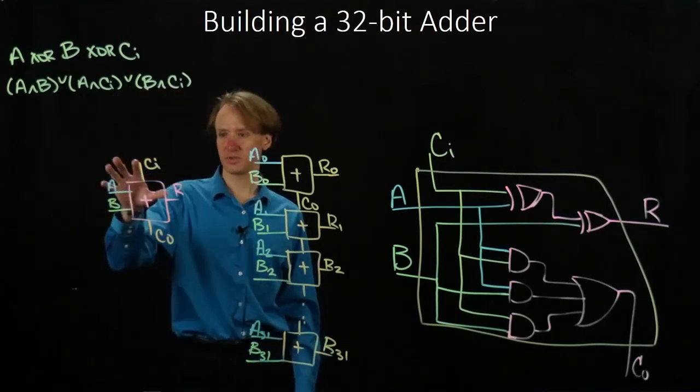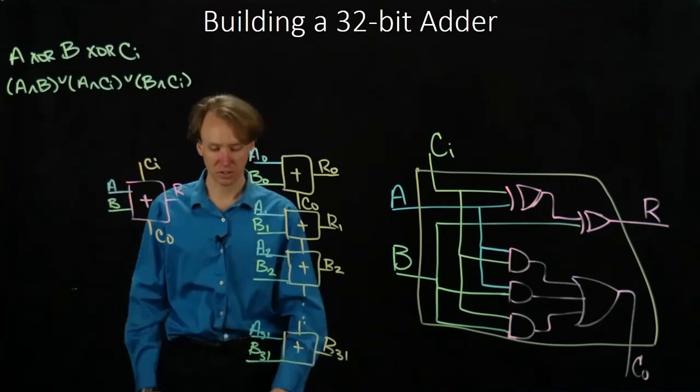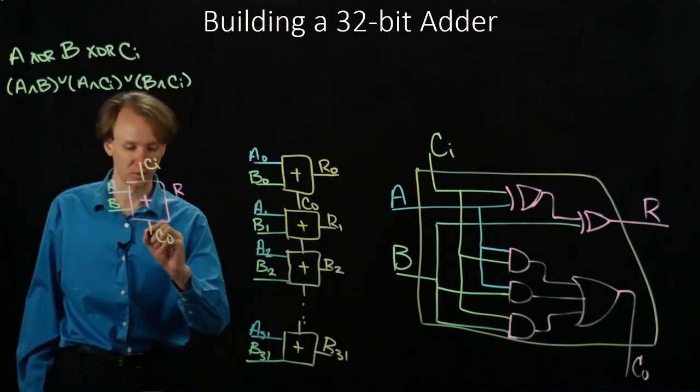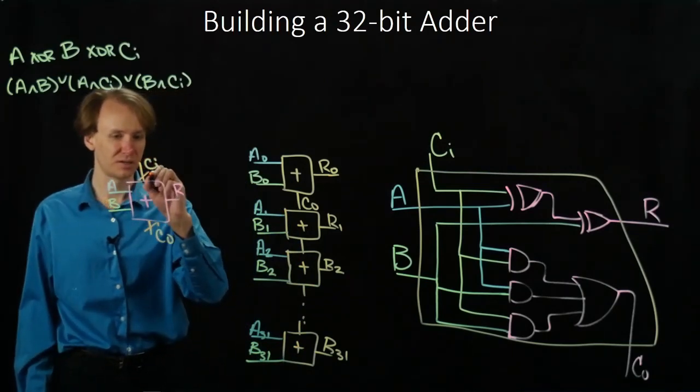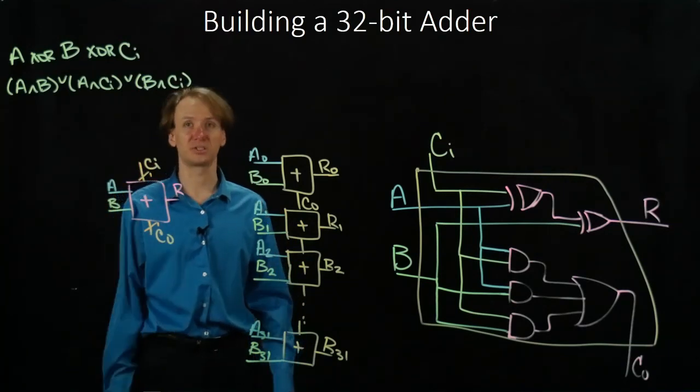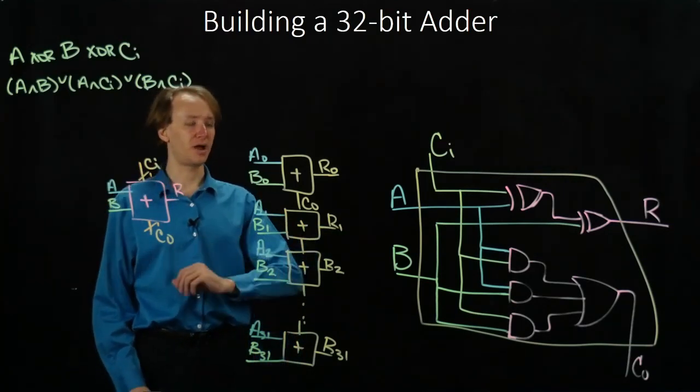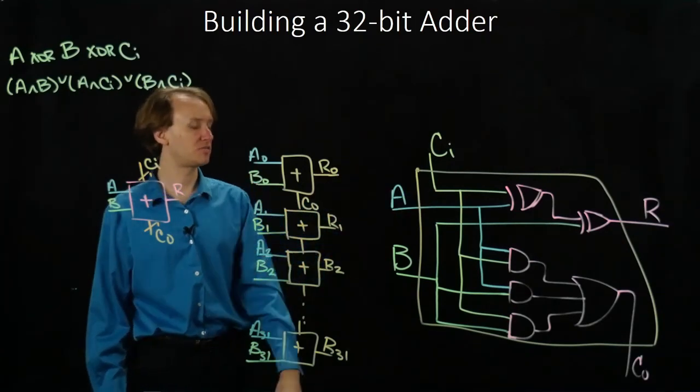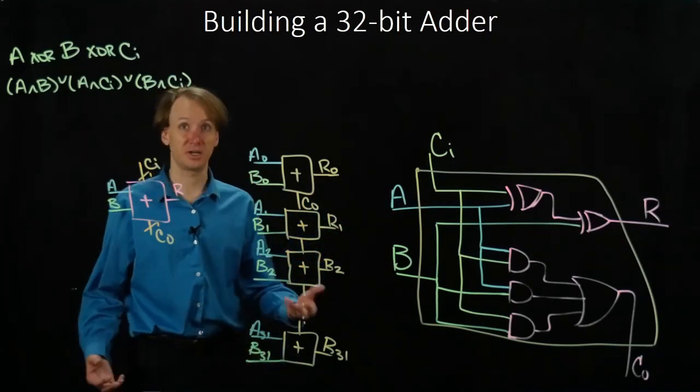So most of these lines are 32 bits: A, B, and result. But the carry in and the carry out would only be one bit. Those are just one bit inputs and outputs. So there is our 32-bit adder. We built an adder that had three inputs instead of two and then just connected them together.